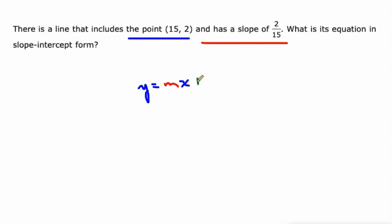And let's think about what we're given here. We are given slope as 2/15. And we're given an xy pair here that works in the equation. So I could put 15 in